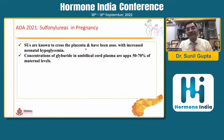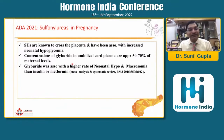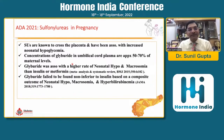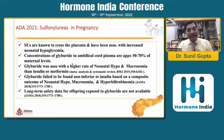Sulfonylureas are known to cross the placenta and have been associated with increased neonatal hypoglycemia. The concentration of glibenclamide in umbilical cord plasma is almost 50 to 70% of the maternal level. It is associated with higher rates of neonatal hypoglycemia and macrosomia than insulin or metformin. It has failed to show non-inferiority to insulin on a composite outcome of neonatal hypoglycemia, macrosomia or hyperbilirubinemia. Long-term safety data for glibenclamide is not available; that is why it is not commonly used in our country, though it is commonly used in the US.